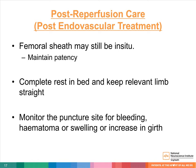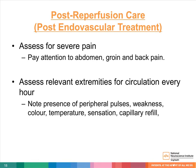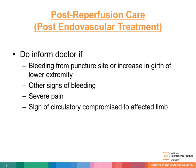For those who have undergone endovascular treatment, the femoral sheath may still be in situ. Patients will need complete bed rest and should keep the affected limb straight to reduce bleeding. The puncture site should be observed for bleeding, hematoma, or increasing girth in the lower extremity every hour. Other signs of bleeding may include tachycardia or hypotension. It is important to assess for severe pain, especially in the abdomen, groin, or back, as this may be a sign of dissection. Monitor lower limbs for circulation every hour. Inform the doctor if there is bleeding or increase in girth, signs of bleeding such as hypotension or tachycardia, severe pain, or compromised circulation to the lower limb.